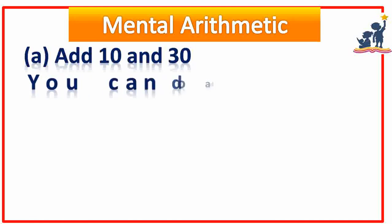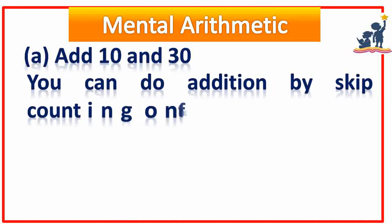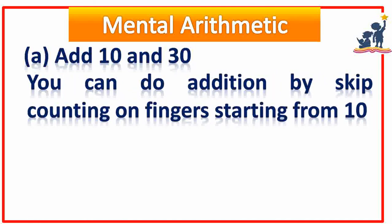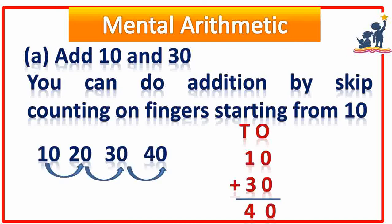First example: add 10 and 30. You can do addition by skip counting on fingers starting from 10. We can count like this: 20, 30, 40. So 10 plus 30 is equal to 40.